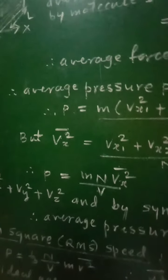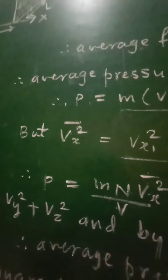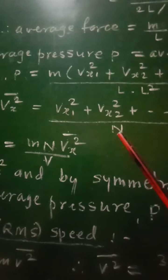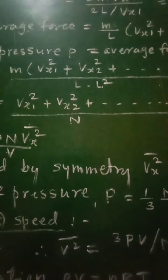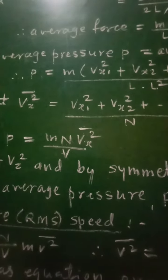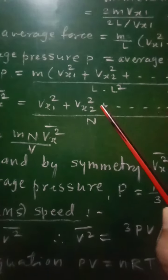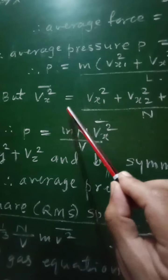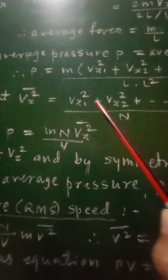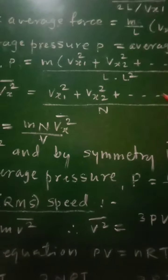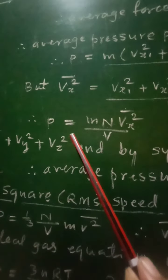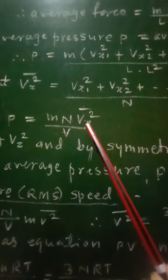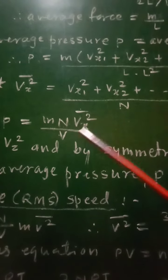Now we know that the mean square velocity v̄ₓ² is given as (vₓ₁² + vₓ₂² + ... + vₓₙ²)/n. Therefore the sum vₓ₁² + vₓ₂² + ... equals n·v̄ₓ². Substituting this, the average pressure P equals mnv̄ₓ²/V, where V represents the volume.